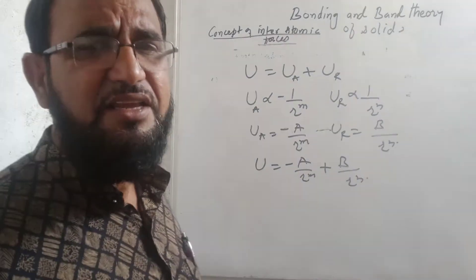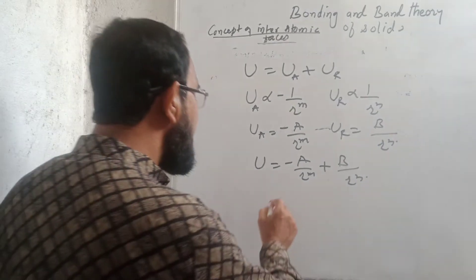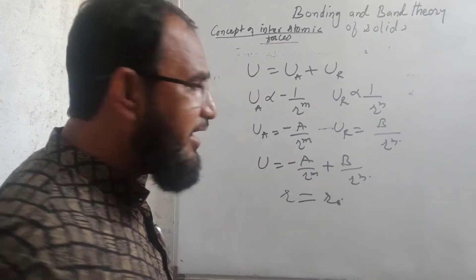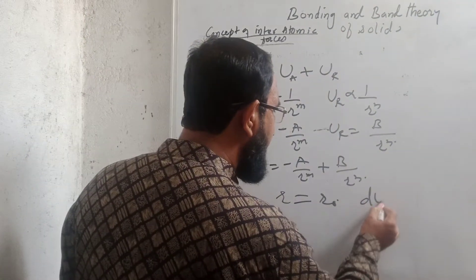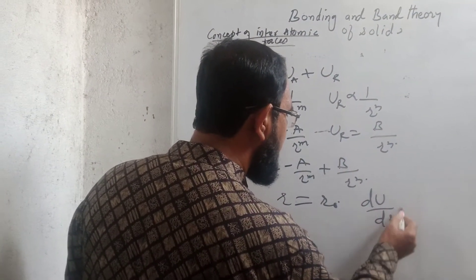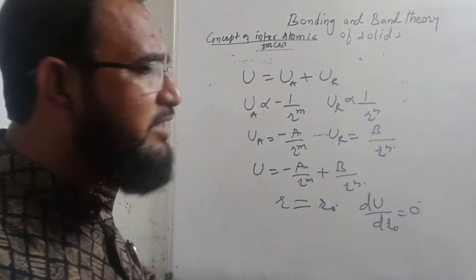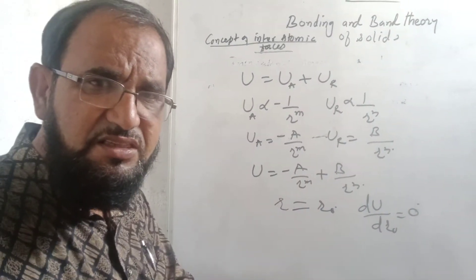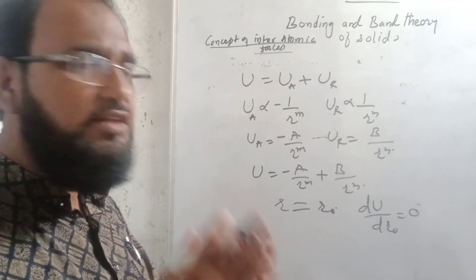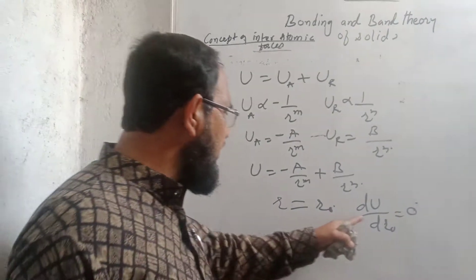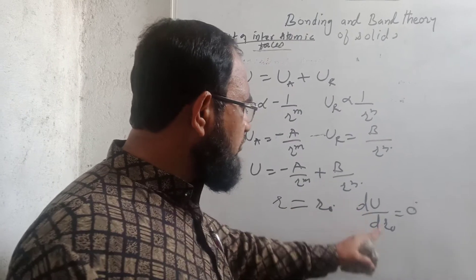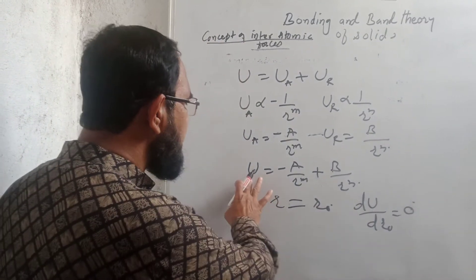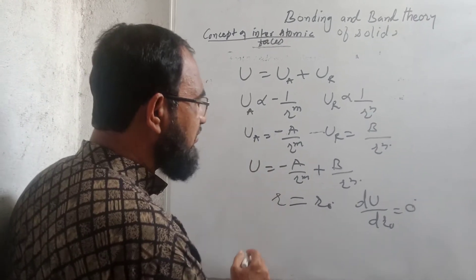Now when there is equilibrium, this distance R will be equal to R0, and at that moment we can say that dU/dR at R0 should be equal to zero, meaning the energy will become minimum. First the energy increases, then decreases, and at equilibrium it becomes minimum — that is, when R equals R0, dU/dR equals zero. We differentiate the total energy equation with respect to R.